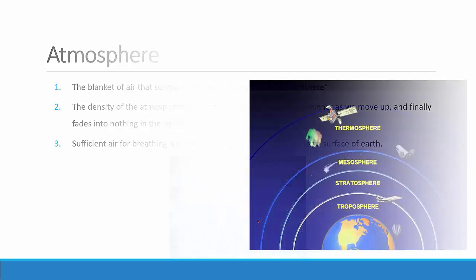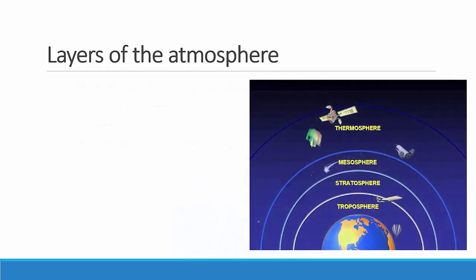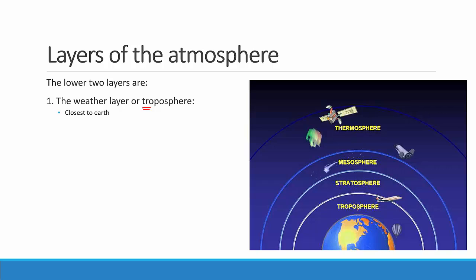Let's talk about the layers of the atmosphere now. We will be concentrating only on the troposphere and the stratosphere. The layer closest to the earth is the troposphere. It extends about 15 kilometers from the surface of the earth. This is the area which will have air sufficient for our breathing, so living beings can breathe air present in the troposphere comfortably.